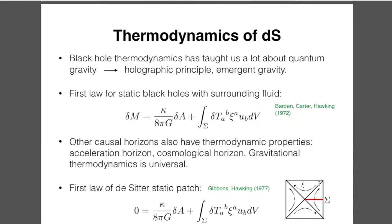Let me start with a very simple case: consider a static patch. Black hole thermodynamics is very important in understanding quantum gravity — in particular, it has taught us about the holographic principle and the emergence of gravity. I want to focus on the first law for static, non-rotating black holes with surrounding fluid matter. This was derived in the early 1970s by Bardeen, Carter, and Hawking. There is an integral over the stress tensor contracted with the timelike Killing vector and a unit normal to a spatial slice running from the bifurcation surface to spatial infinity.